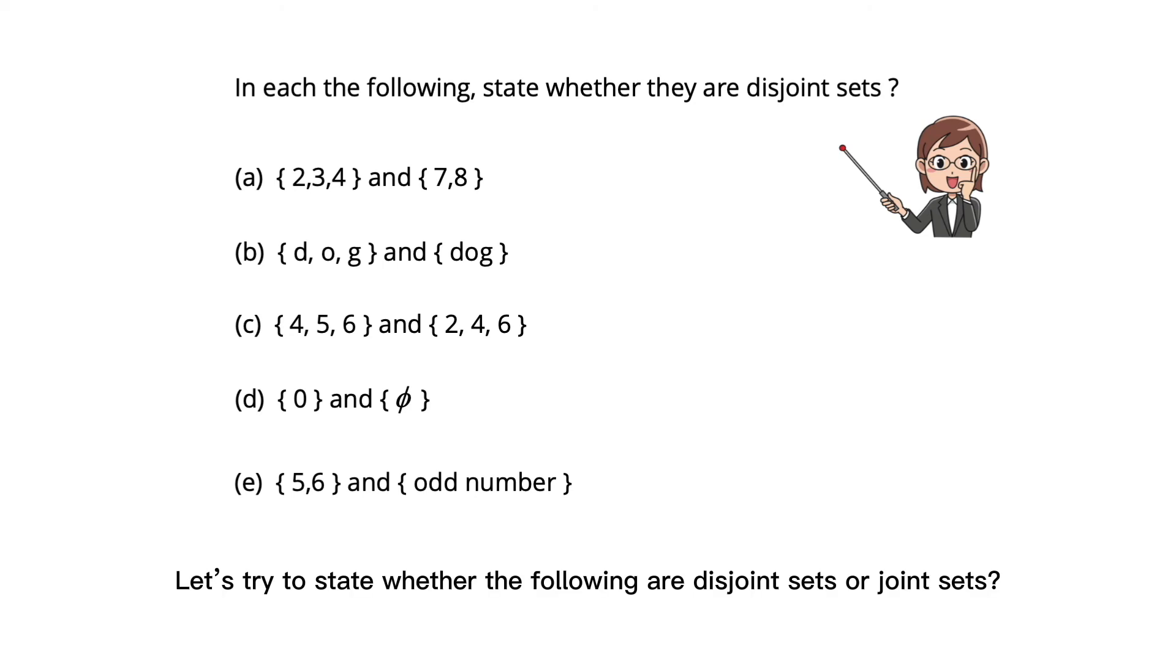Let's try to state whether the following are disjoint sets or joint sets. A, they are disjoint sets because they have no common elements between them.